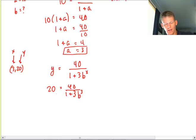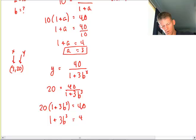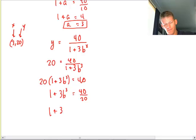So now all I need to do is cross-multiply 20 times 1 plus 3b to the 3rd equals 40. So I'm going to divide out the 20, which will be 2. So I'm going to subtract 1 from the 2 and get 1. My b cubed will be 1 third.